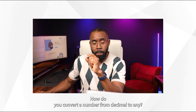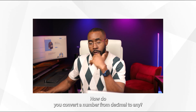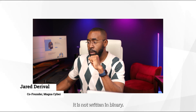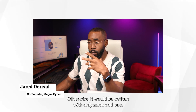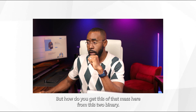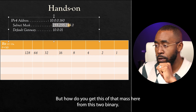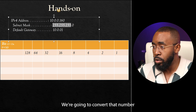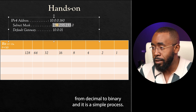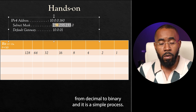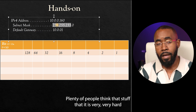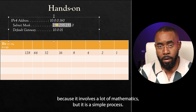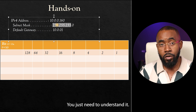How do you convert a number from decimal to binary? Look at this number here — it is not written in binary, otherwise it would be written with only zeros and ones. But how do you get this subnet mask from decimal to binary? Let's understand that very quickly. We're going to convert that number from decimal to binary, and it is a simple process. Plenty of people think that subnetting is very hard because it involves a lot of mathematics, but it is a simple process — you just need to understand it.